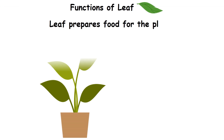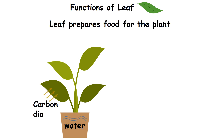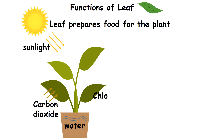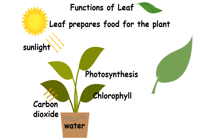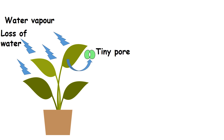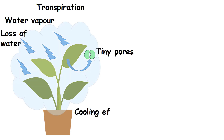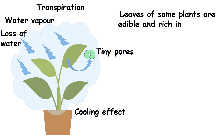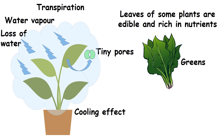Functions of leaf. Leaf prepares food for the plant with the help of water, carbon dioxide, sunlight and chlorophyll. This process is called photosynthesis. Hence, it is called the food factory of the plant. The loss of water in the form of water vapor happens through the tiny pores in the leaves — this process is called transpiration. It gives a cooling effect to the plant. Leaves of some plants are edible and rich in nutrients. Example: greens and cabbage.